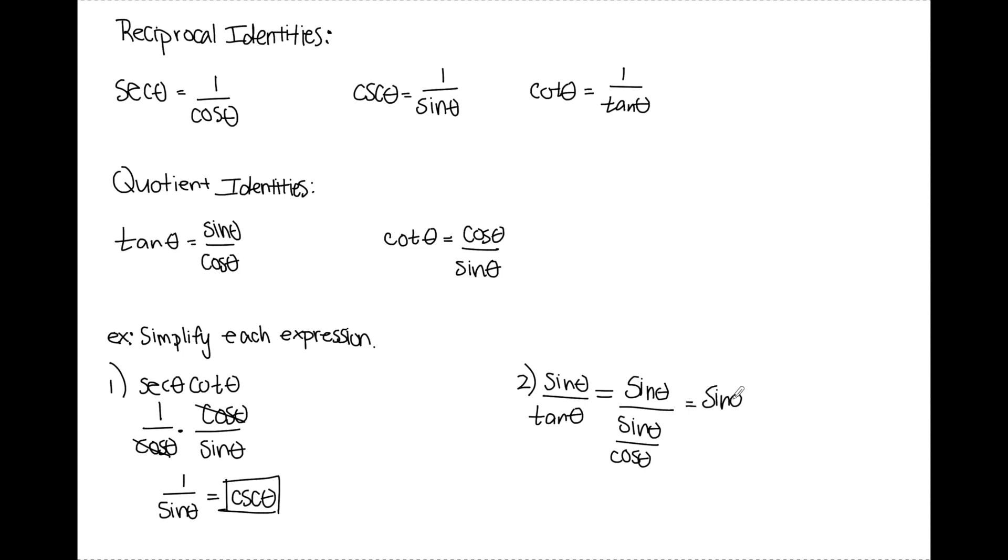So I keep sine theta, and that's really sine theta over 1. I change division to multiplication. I flip that bottom fraction. From here I can see my sine theta's cancel, and I'm left with just cosine.